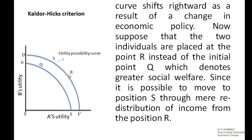Since R is on the new utility-possibility curve, it is possible to move from point R to point S or any other point. At point S, individual B's utility has also increased somewhat, while individual A's utility is also increased. Thus, through a reallocation of income, it is possible to increase the utility of both persons. Therefore, a movement from Q to R represents an improvement in welfare according to the Kaldor-Hicks compensation principle.